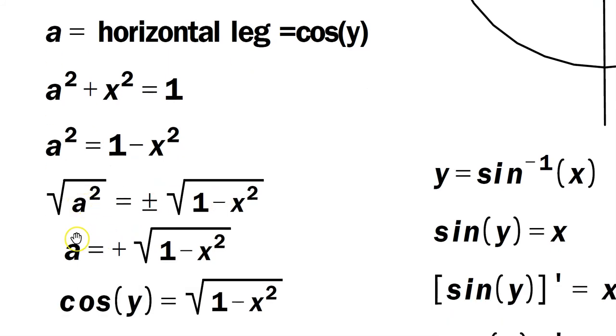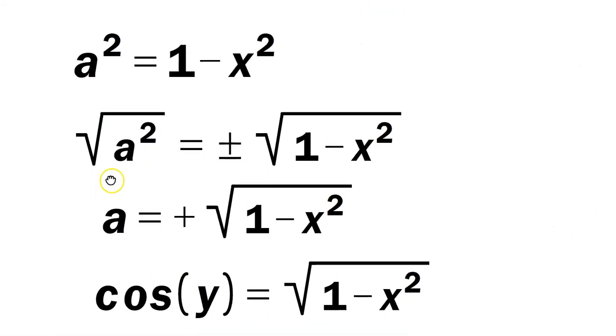Then you take square roots on both sides, as shown here. So you're going to have the root of a squared equals plus or minus, at first, the root of 1 minus x squared.